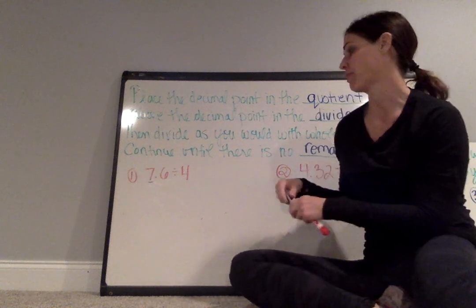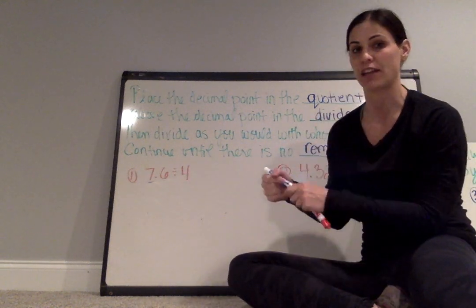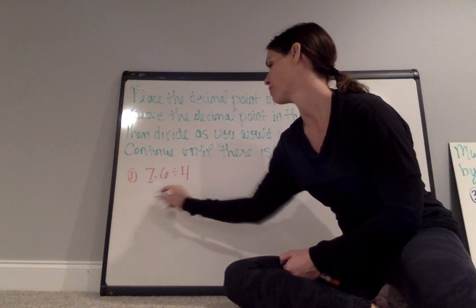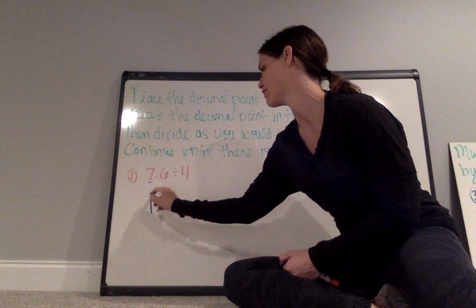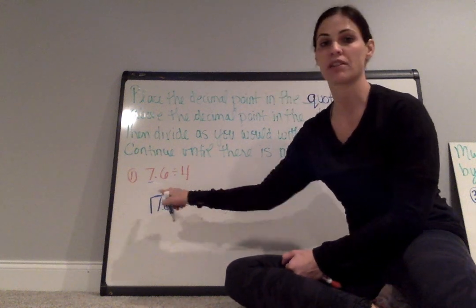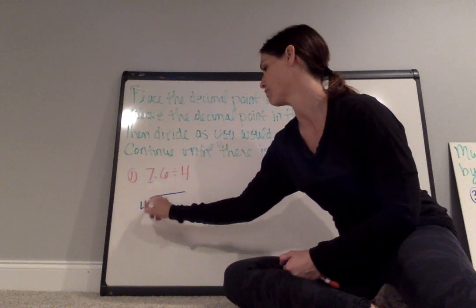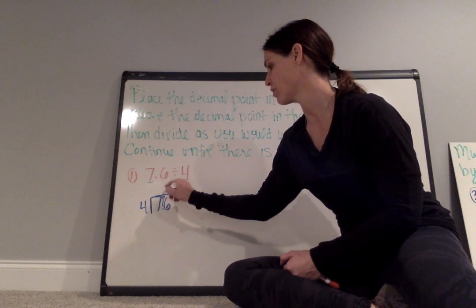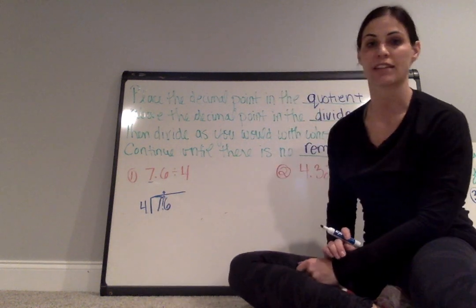So our first problem is 7.6 divided by 4. When it is written horizontally, the first number goes in the dividend, which is underneath the division bar. The second number is our divisor, so that goes out in front. I'm going to move the decimal point up into the quotient and then divide as I normally would.